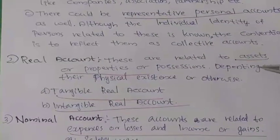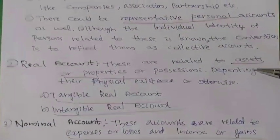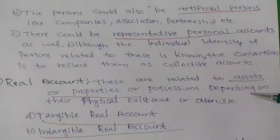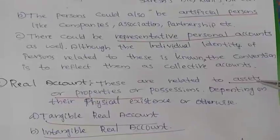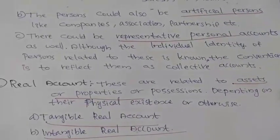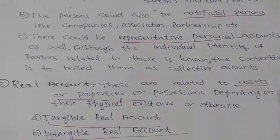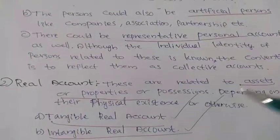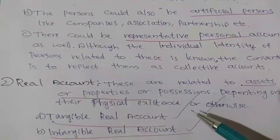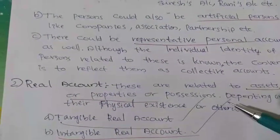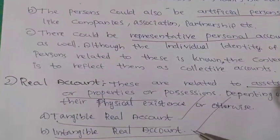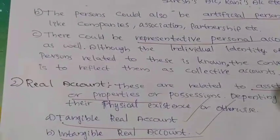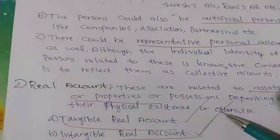The second classification of accounts is Real Accounts. If you have access to property, those accounts are called real accounts. These are tangible real accounts and intangible real accounts. If we use a tangible account, it is a tangible real account. Intangible real accounts include goodwill and copyright.